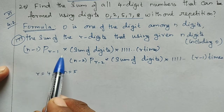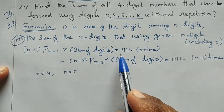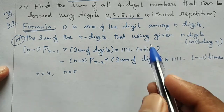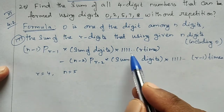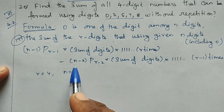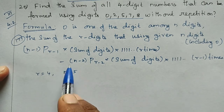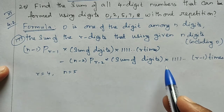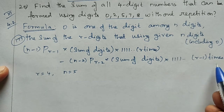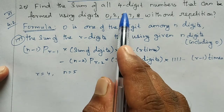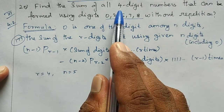The formula for the sum of r-digit numbers formed from n digits including 0 is: (n−1)P(r−1) × sum of the digits × 111...1 (r times), minus (n−2)P(r−2) × sum of the digits × 111...1 (r−1 times).